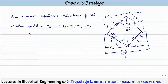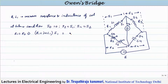We know the potential difference across the two sides of the detector is equal to zero, so EMF E1 will be equal to E2. E1 is (R1 + jωL1) times I1, and this will be equal to E2, which is R2 minus j/(ωC2), or simply R2 + 1/(jωC2), multiplied by I2.